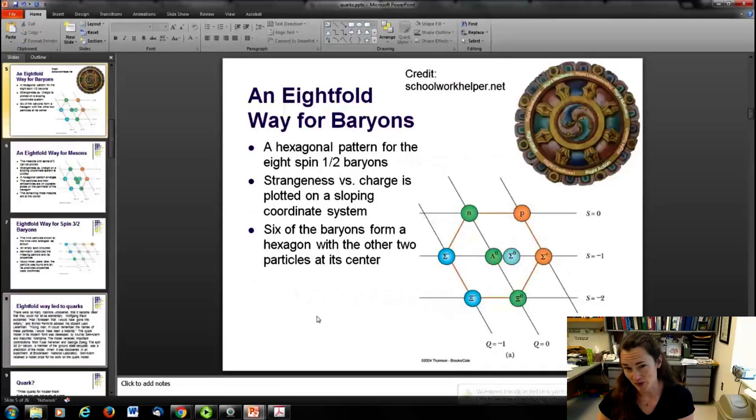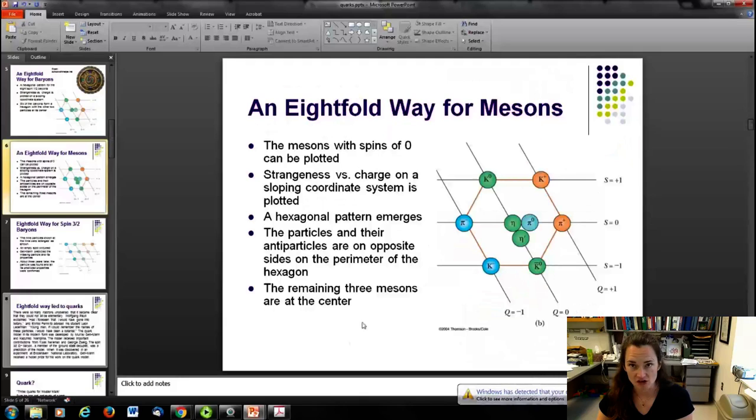So the Eightfold Way for baryons, here's the pattern. It's a hexagonal pattern, actually, for the eight spin one-half baryons: the proton, the neutron, the sigma, and so on. What's happening here is strangeness versus charge is plotted on this sloping coordinate system that fits with a pattern of a regular hexagon. And six of the baryons form a hexagon with the other two particles in the center. At the top here, you have strangeness equal to zero. In the middle, strangeness number is minus one. At the bottom, strangeness number is minus two. Likewise, the charge is zero through the middle, plus one on the right and minus one on the left. The mesons also followed a similar pattern. If you plot strangeness versus charge on that sloping coordinate system, then you see the same hexagonal pattern. But now you have more mesons in the center here. The particles and their antiparticles are on opposite sides of the perimeter of the hexagon with the remaining three mesons in the center.